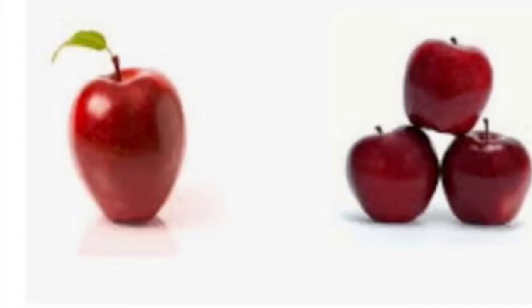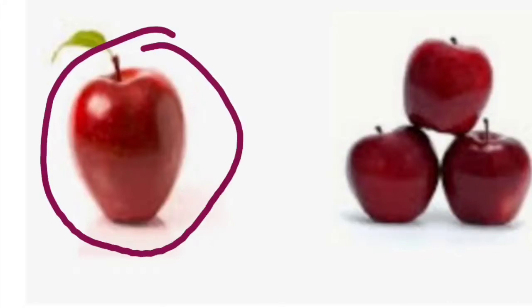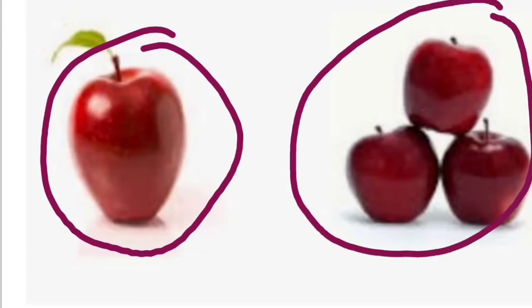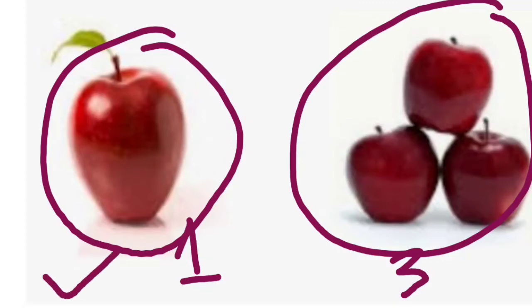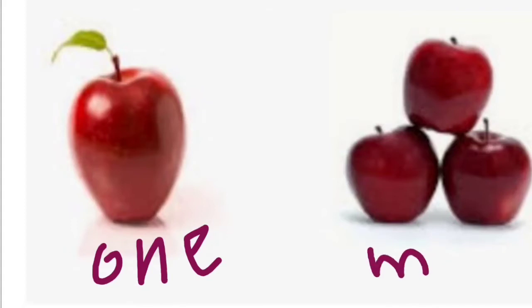Shall we see the pictures? Are you ready? Tell me, what is this? This is an apple. And these are also apples. How many apples are there? This is one apple, and these are three apples. So when we have only one thing, we say 'one.' And when we have more than one thing, we say 'many.' One — many. One — many. Understood? Very good!